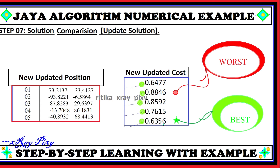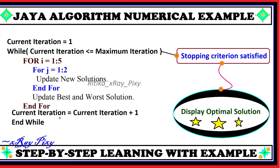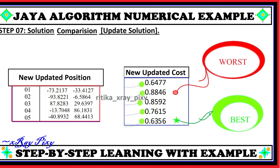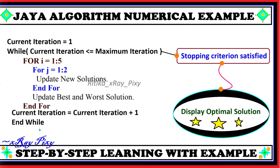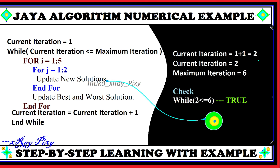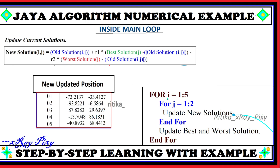After updating, we select the best and worst solution among all candidates. Candidate five has the minimum value and is the best solution; the second candidate has the maximum value and is the worst. We then increment the iteration counter. The current iteration becomes 2, which is less than 6, so the condition is true and we repeat the loop.